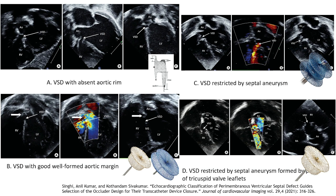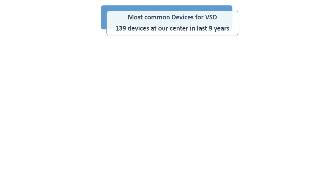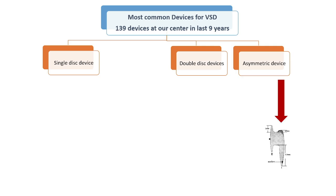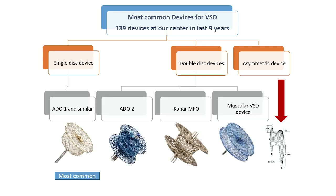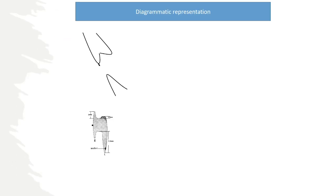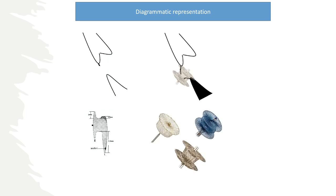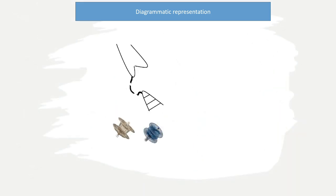There is a core classification given by Anil Kumar Sir and Kothanda Shiva Kumar Sir, from which we choose the device. We have closed 139 cases with different devices. When there is an aortic rim short, we use the asymmetric device, though this is not done routinely now. When there is a good rim and aneurysmal tissue, we use single or double disc devices. When there is an aortic rim present, we use the single disc device; when there is a pouch with septal aneurysmal tissue, we can use both single or double disc devices.